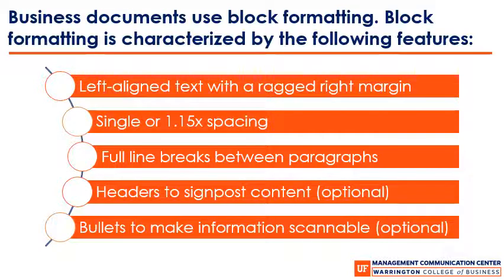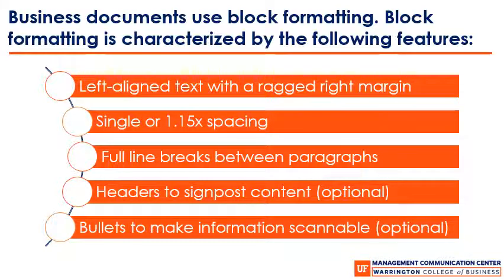These traits include left-aligned text with a ragged right margin. Block formatting also features single or 1.15 times spacing. It includes full line breaks between paragraphs. And then it typically includes two kinds of optional formatting: headers and subheaders to signpost content and signal to the reader the structure or organization of a document, and bullet points or numbered lists, which help organize information for easy scanning.